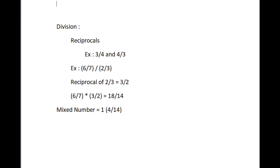Before going to division, we should know about reciprocals of fractions. Two numbers whose product is 1 are called reciprocals. For example, 3/4 and 4/3 are reciprocals. Division of fractions means multiplying the dividend by the reciprocal of the divisor. For example, to divide 6/7 by 2/3, the reciprocal of 2/3 is 3/2. So multiply 6/7 by 3/2, which equals 18/14.